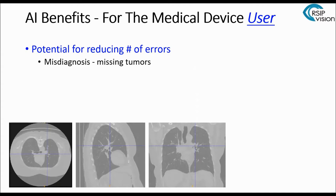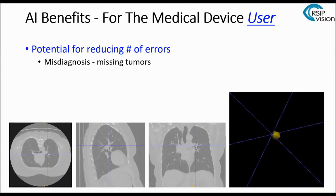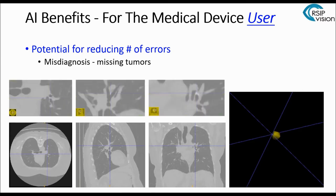Another benefit is the potential for reducing the number of errors. In real life we're humans and we make mistakes — our role is not to replace the user but to help identify and avoid those errors. A major error is misdiagnosis — missing tumors. In this CT scan you can hardly see that there's anything there, but once segmentation is in place the user knows something is there, can zoom in to that specific spot, analyze it, convey their opinion, and reduce the number of misdiagnoses.